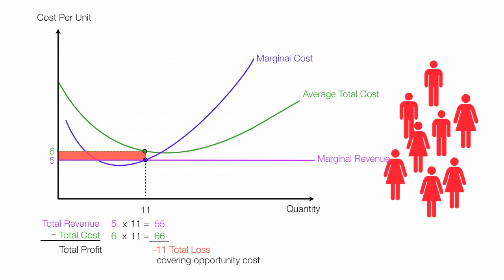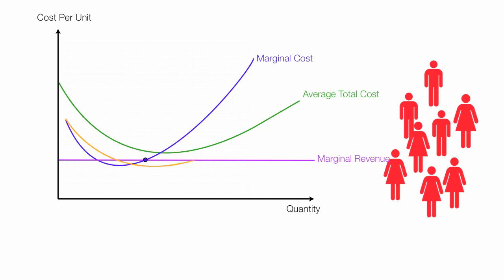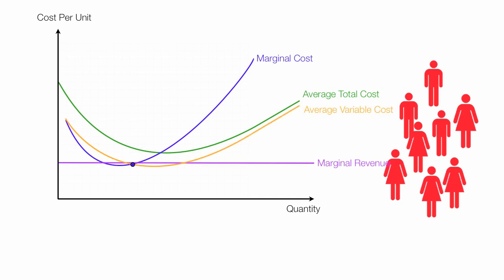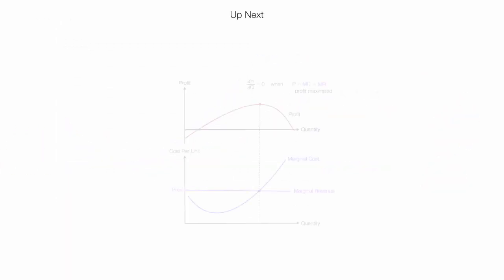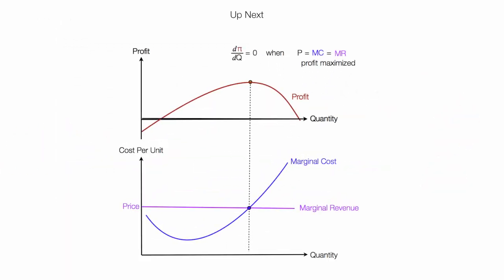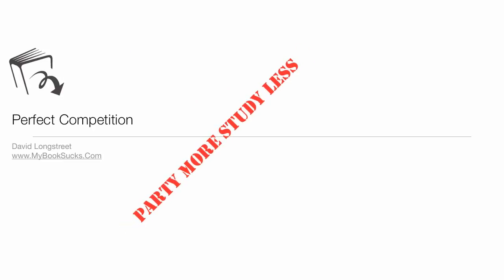Drawing back in the average variable cost curve — if people still enter the market and push the price down even further, we reach the shutdown point. Any price at that level causes suppliers to start leaving the market. Up next, I'm going to do a calculus proof. Even if you're not taking advanced or mathematical-based economics, give it a go. Perfect competition.